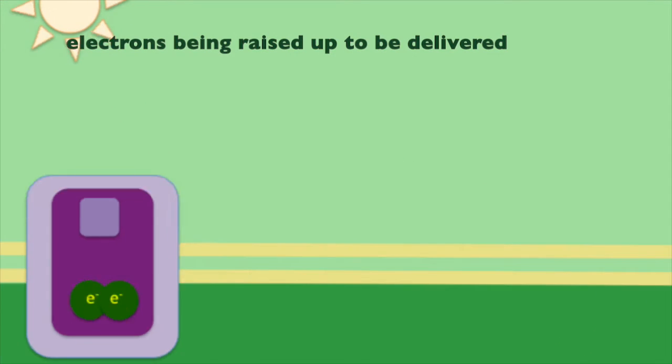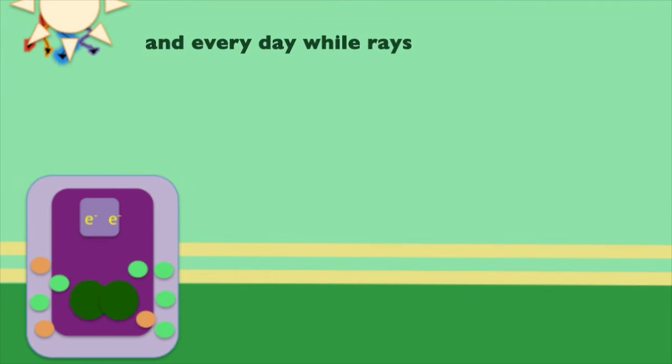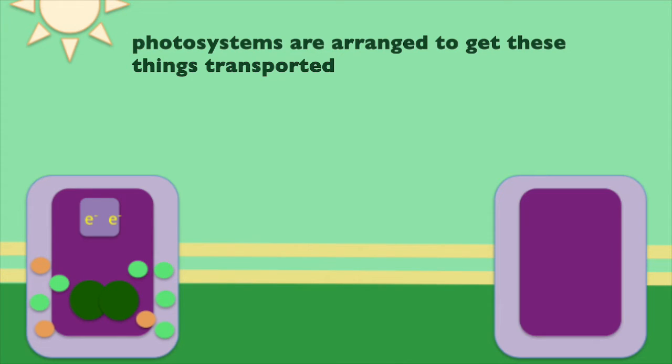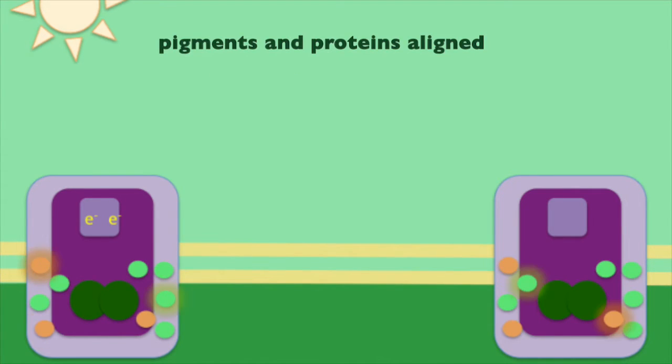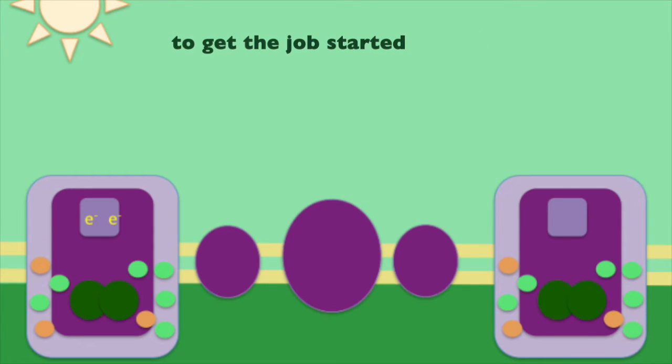Electrons being raised up to be delivered, and every day while rays are imported and sorted, photosystems are arranged to get these things transported, vitamins and proteins aligned to get the job.